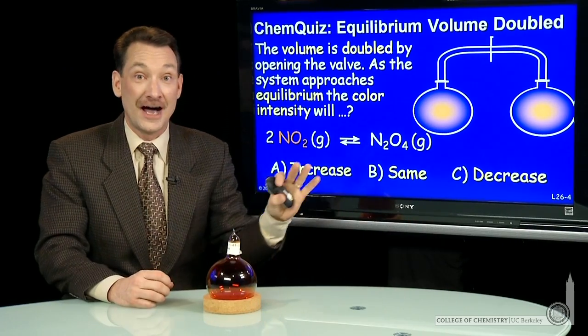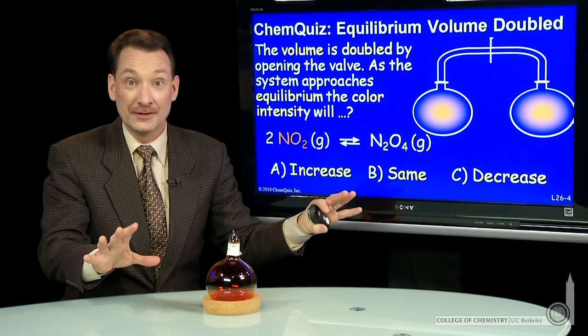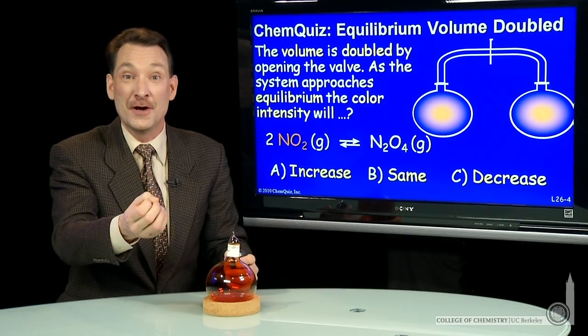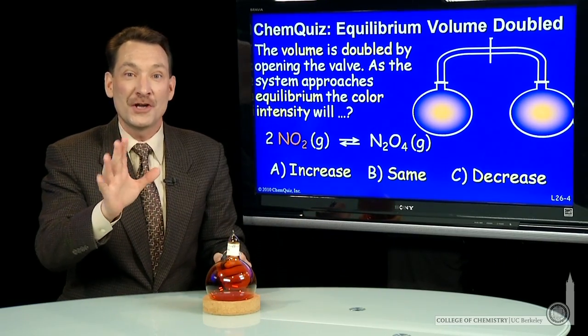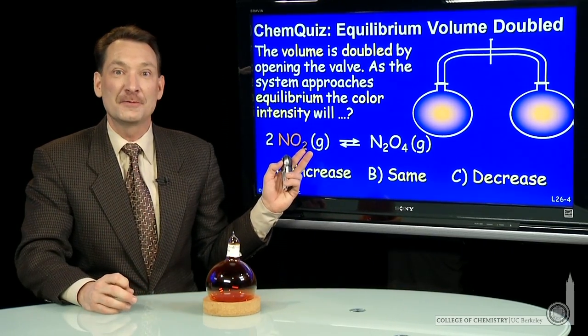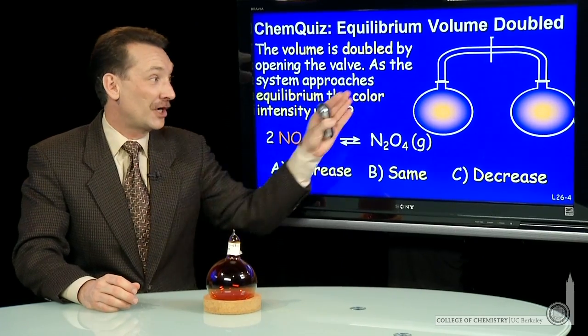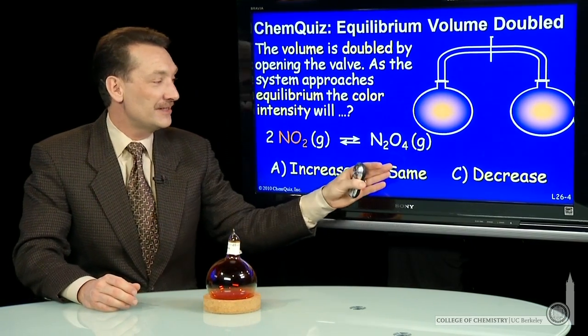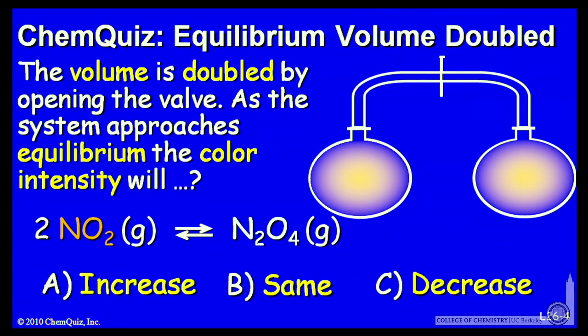Now, initially, when I do that, obviously, it'll get lighter because it'll expand and be less dense. But then the new equilibrium will be established. And the question I have is, as that new equilibrium is established, does the color of the two-bulb system increase, stay the same, or decrease? Think about that for a minute and make a selection.